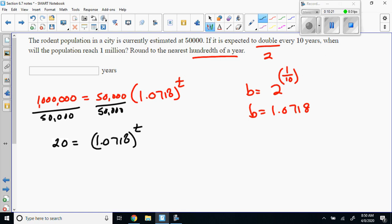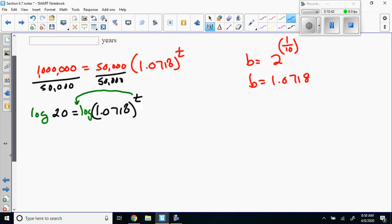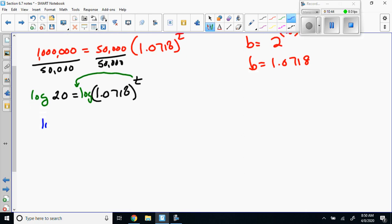We get 20 equals 1.0718 raised to the t. We've got an exponential and the easiest thing is we're just going to take the log of both sides, which brings that t out to the very front. The log of 20 equals t times the log of 1.0718.